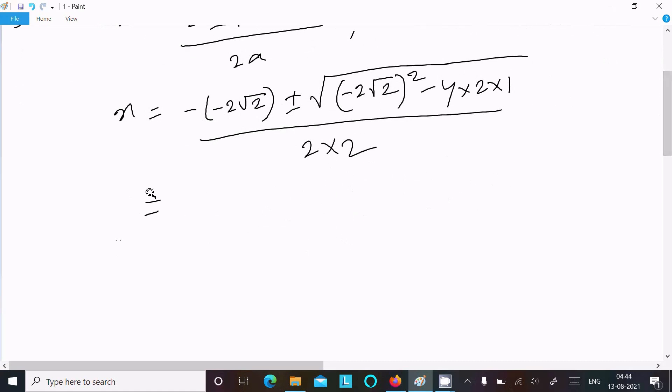Now here minus minus that change to plus 2√2 come there. Next is minus 2 square that is 4, and √2, so 4 × 2 that is 8, then here 4 × 2.